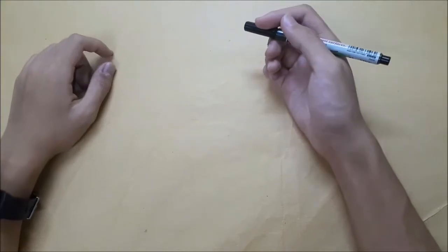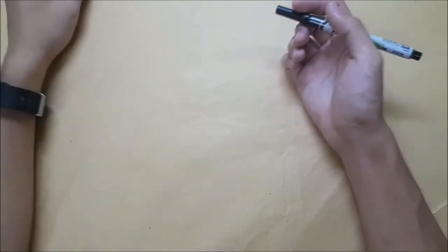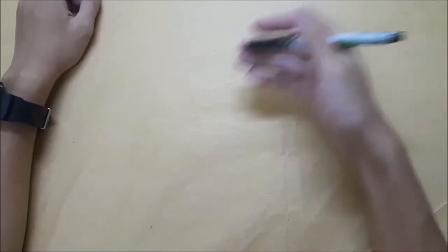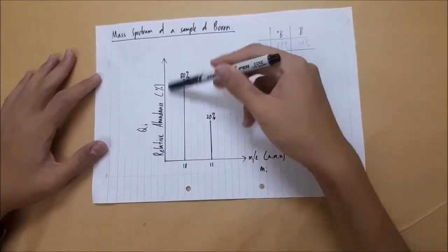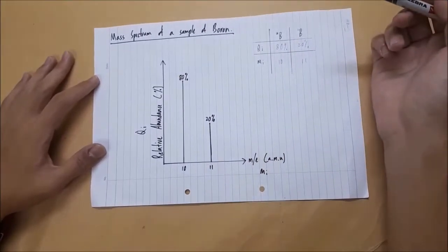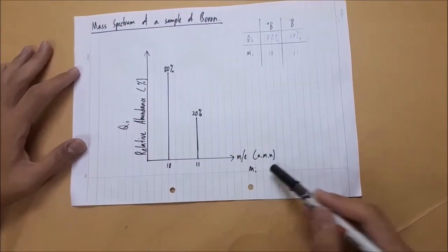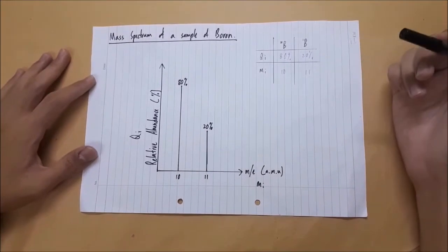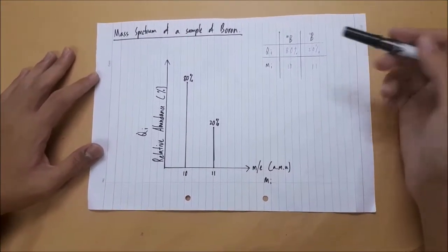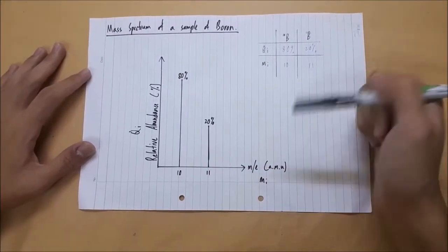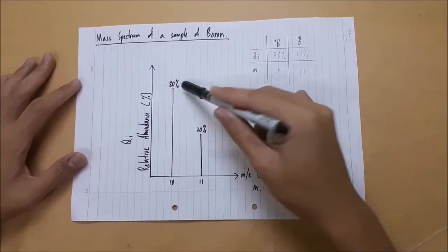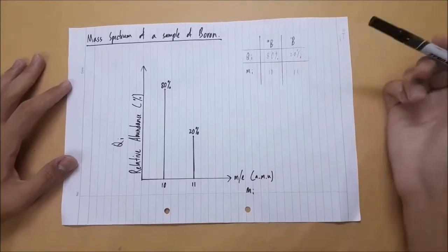Moving on to the next topic, we have the mass spectrum. Mass spectrum is the plot of Relative Abundance over mass. Here's an example of mass spectrum of a sample of boron. As we can see here, on the y-axis, we have the Relative Abundance in % while on the x-axis, we have the mass per charge of mass in atomic mass unit. The numbers labeled on the x-axis is the mass of each isotope. Meanwhile, the numbers labeled on the bar there is the relative abundance of each isotope.